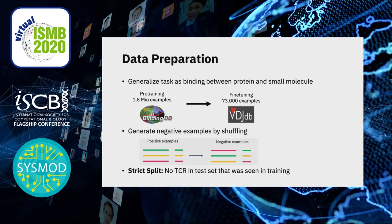Since we generalize the task of TCR epitope binding as the binding between a protein and a small molecule, we can use the BindingDB database to pre-train on over 1.8 million examples. Then we use the VDJdb database to fine-tune the model on 73,000 examples of T cell receptors interacting with epitopes.